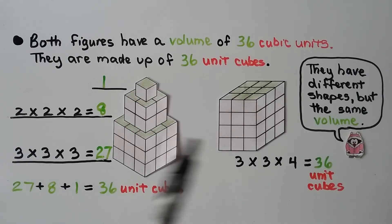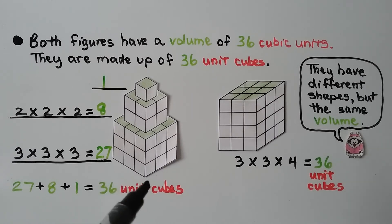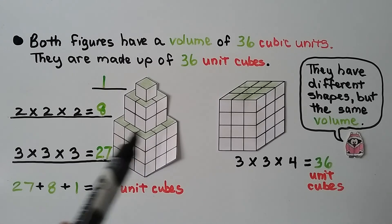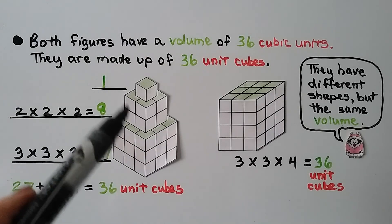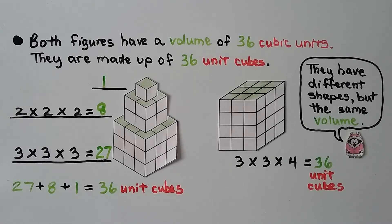Take a look at these two solid figures. Both figures have a volume of 36 cubic units — they're made up of 36 unit cubes. The first figure has 3 going across and 3 going back, that's 9, and it's 3 units tall: 27 unit cubes. Plus a section of 2 by 2 by 2, which is 8 cube units, plus 1 on top. 27 plus 8 plus 1 equals 36 unit cubes.